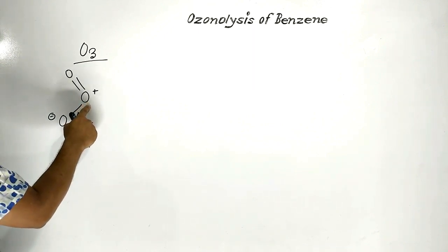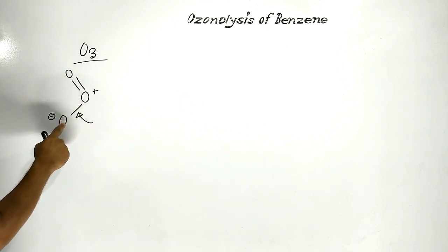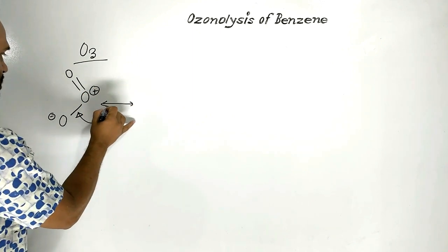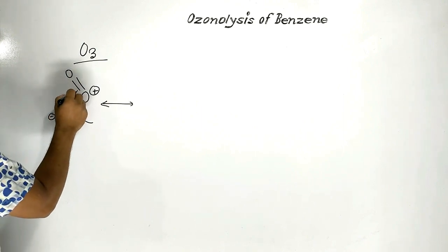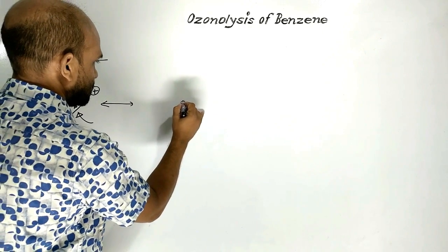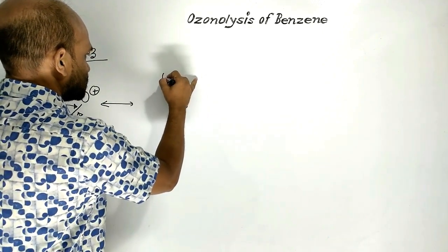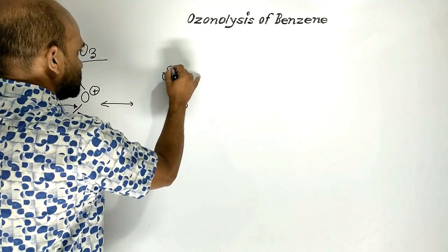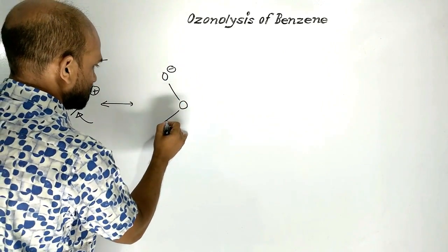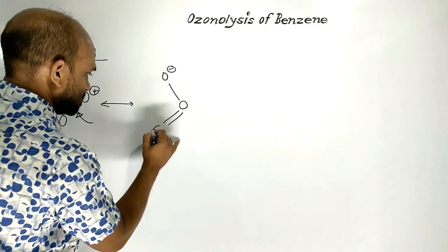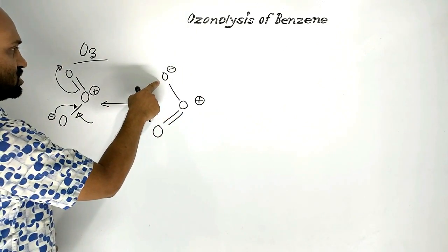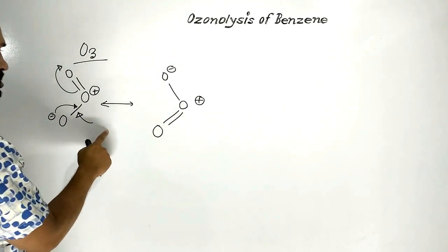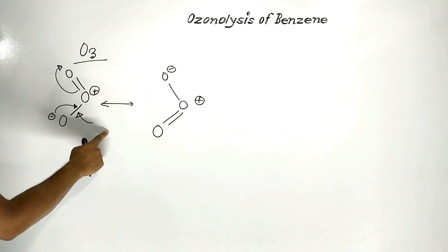For this reason, over this oxygen there is a positive charge and over this oxygen there is a negative charge. This may be one structure of ozone. Another structure may be like this: here a single bond with negative charge on one oxygen, and a double bond with positive charge on the other, and over this oxygen a negative charge. These two structures are resonance structures of ozone.